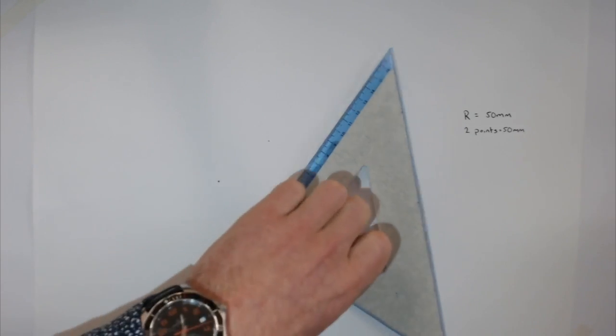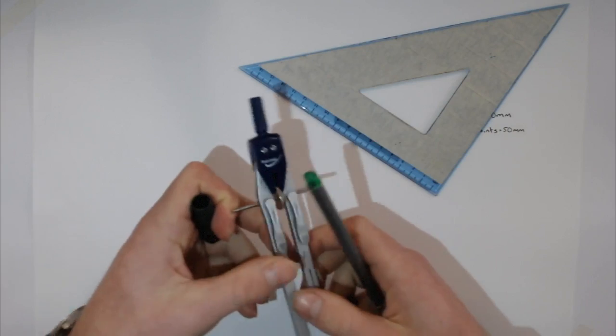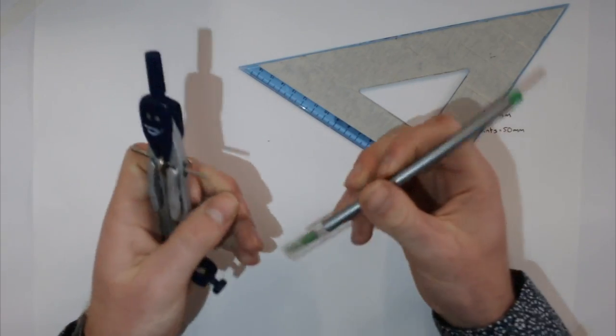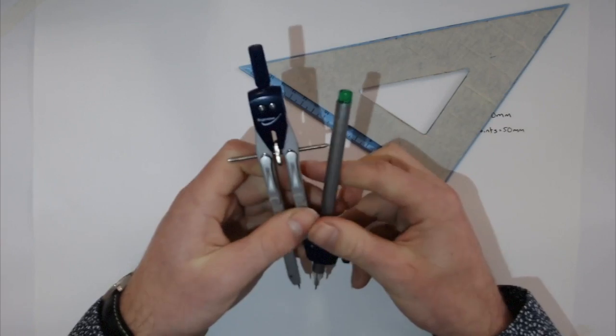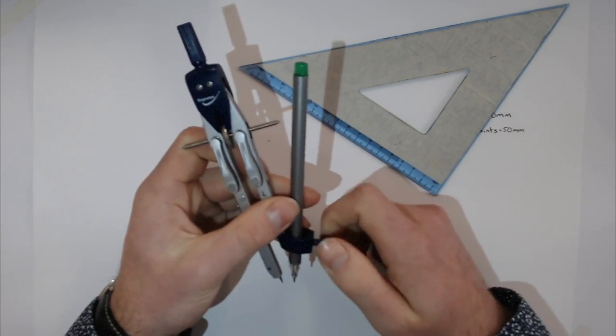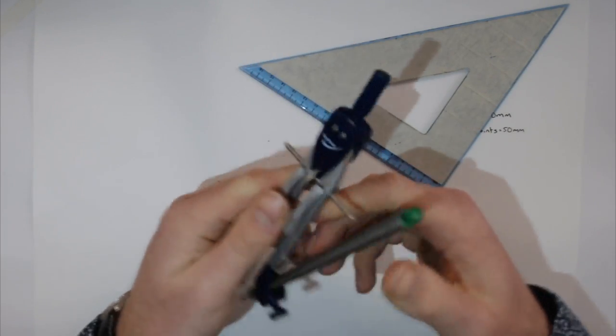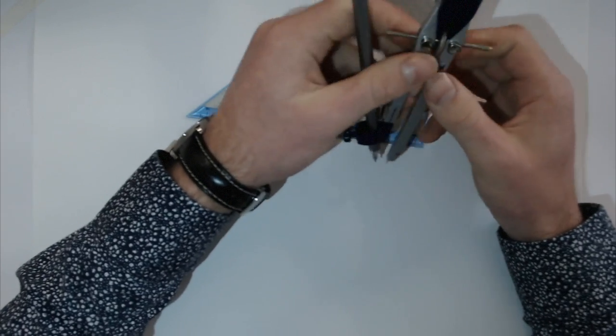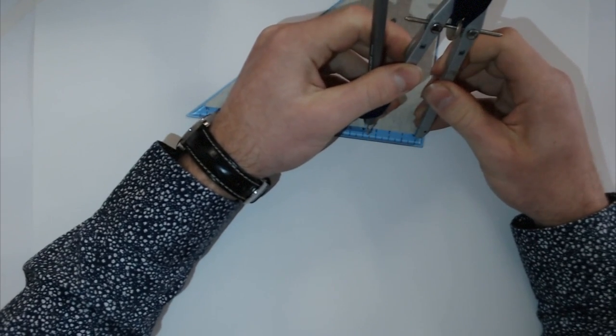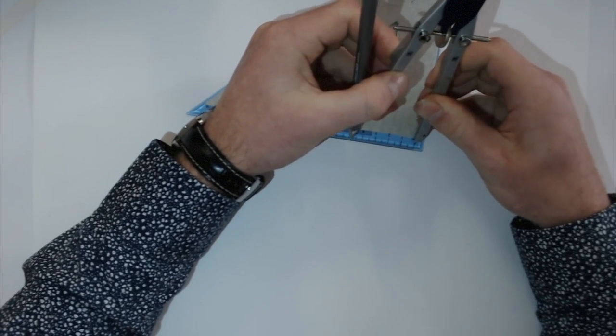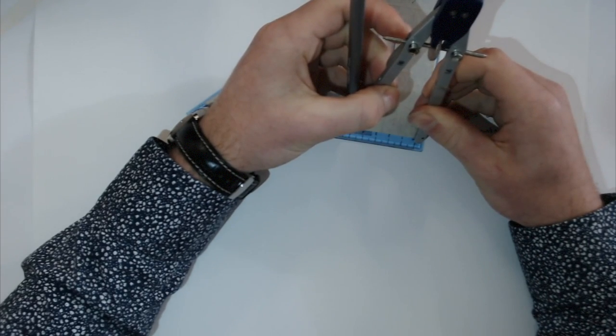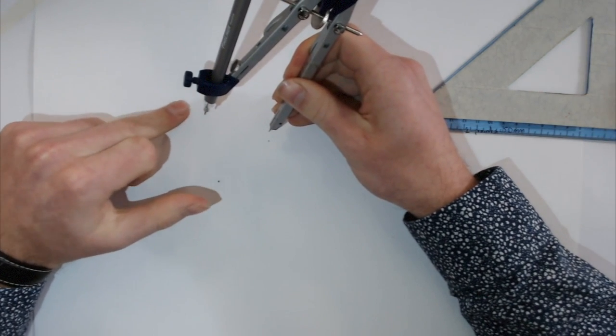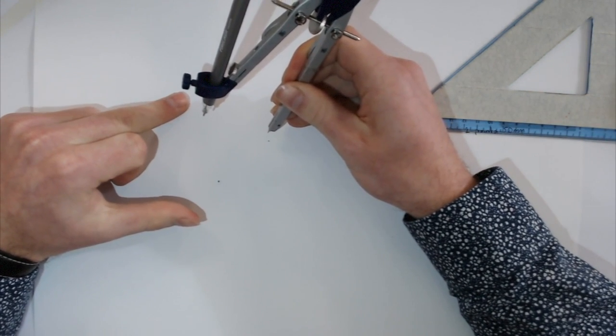So, how we complete that is, we take our compass. We set it to 50 millimeters, so let's take our compass and set it out here to 50 millimeters. And I know that somewhere out here is going to be our radius or our center.